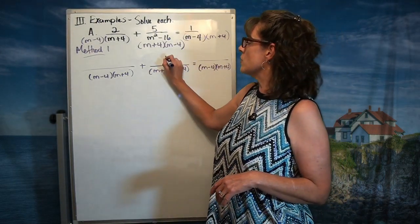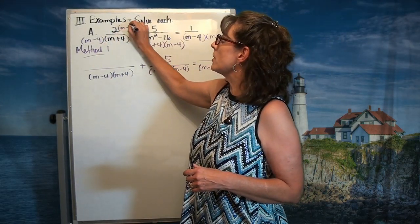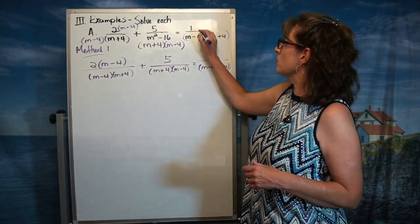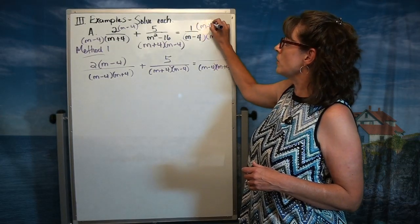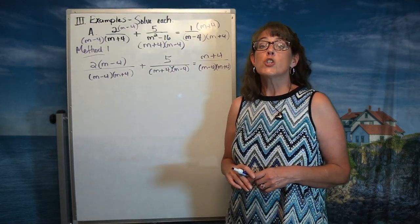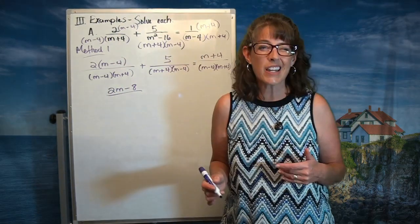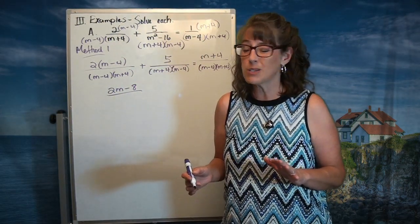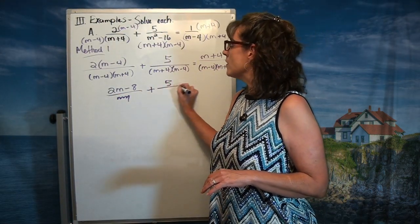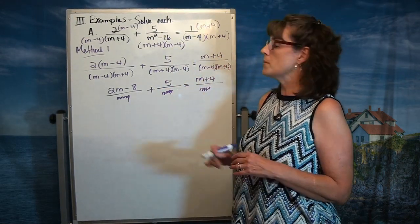For the first fraction, I needed to multiply by m minus 4, so I multiply my numerator by m minus 4 — giving me 2 times (m minus 4). Over here, I needed to multiply the denominator by m plus 4, so I multiply my numerator by m plus 4. Everything has been adjusted. I can go ahead and distribute to get 2m minus 8. Then — I'll get a little lazy here and just put a squiggle for the common denominator — plus 5 over common denominator equals m plus 4 over common denominator.